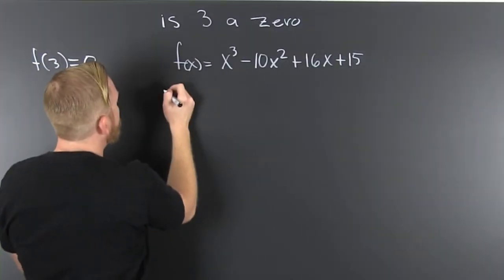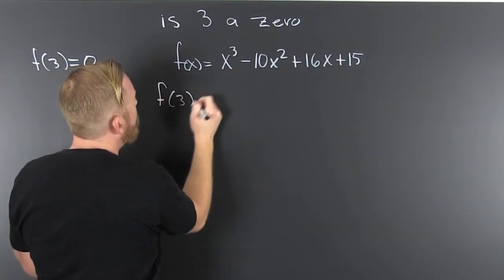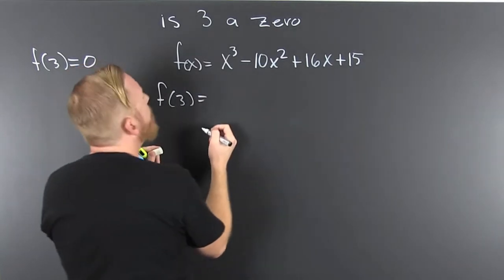So let's find it. Let's use substitution. f of 3. That says everywhere I see an x, I'm going to put a 3.